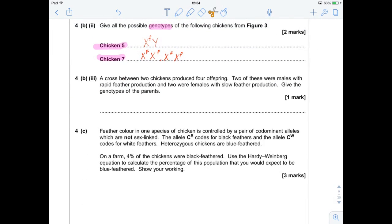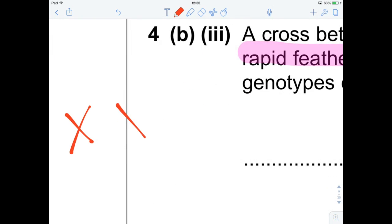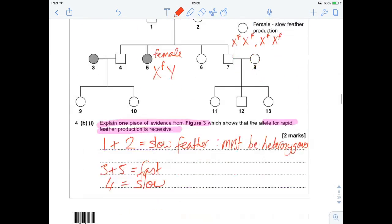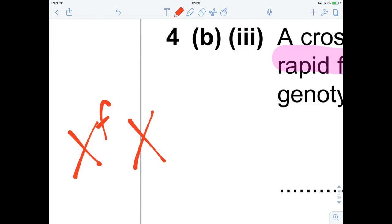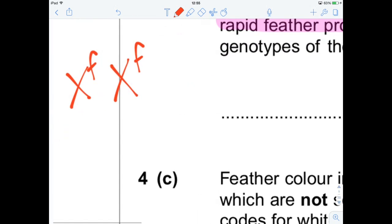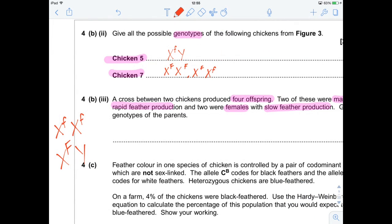Let's have a look at 4B part 3. A cross between two chickens produced four offspring. Two of these were males with rapid feather production, and two were females with slow feather production. So the two males with rapid feather production, they're going to be XX. And if they were rapid feather production, they're going to be homozygous recessive. And if the females had slow feather production, they're going to be this combination.